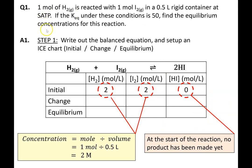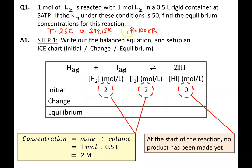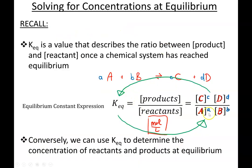In our first example we are taking 1 mole of hydrogen gas and reacting with 1 mole of iodine gas in a 0.5 liter rigid container at SATP. SATP stands for Standard Ambient Temperature and Pressure, defined as 25 degrees Celsius or 298.15 Kelvin, and Standard Ambient Pressure is 100 kPa.